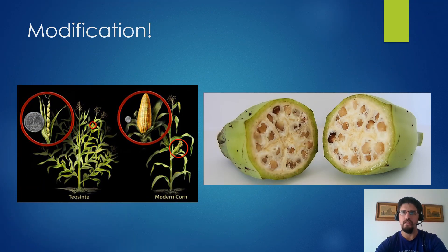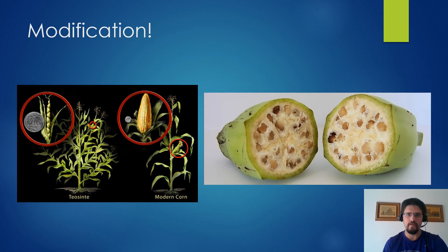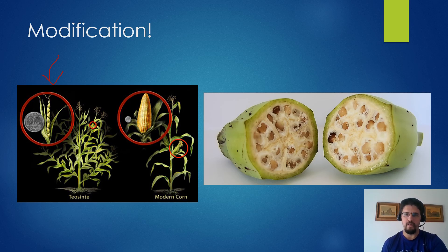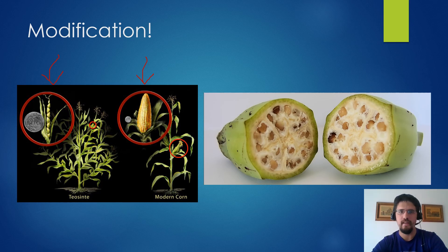One of the themes of AP World is humans modifying their environment, and an example of that is found in our food — it's not just modifying the land, sometimes it's modifying the crops. Over here on the right we have an example of a little grass-like plant called teosinte. The pods are hard and very difficult to digest, but Mesoamerican farmers in what's now the Valley of Mexico slowly bred the best of those plants to create the modern corn that you and I know today.